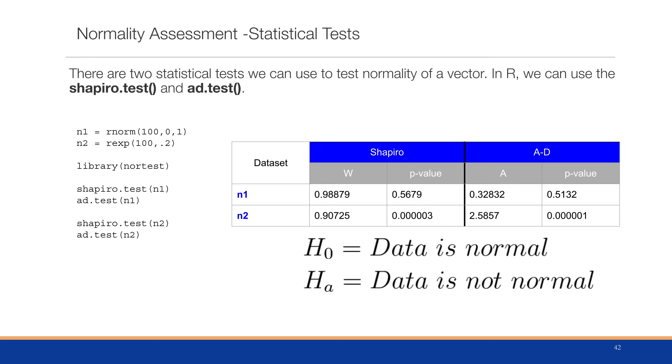What we're looking for is to see if we're going to reject or not reject the null hypothesis. In both cases, the null hypothesis is that the data is normal and that the alternative hypothesis is the data is not normal. So we're hoping if we want a normal dataset that we do not reject the null hypothesis. So we're going to focus on the p-value.